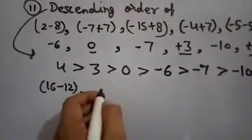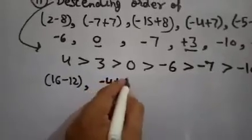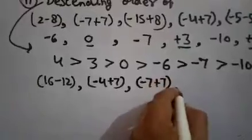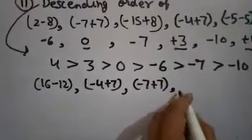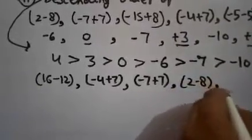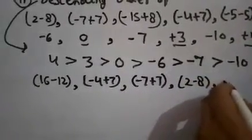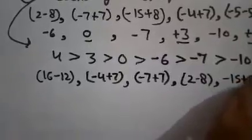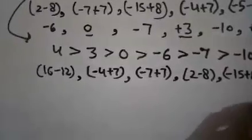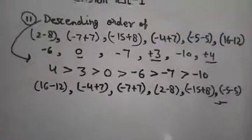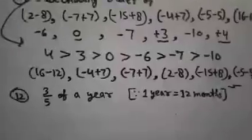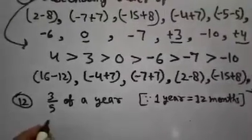Now note down the actual values: 4 is called 16 − 12; 3 is called −4 + 7; 0 is called −7 + 7; −6 is called 2 − 8; −7 is called −15 + 8; and −10 is called −5 minus something. This will be your descending order. I hope you understand the solution process for this question.